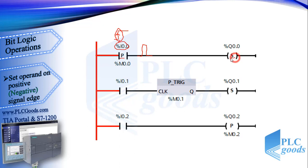Usually a set instruction is used to latch the state, so by the first line Q 0.0 remains on. If you use a simple assignment, Q 0.0 will be on for one program cycle which is about 5 ms. The next instruction is used to query a 0 to 1 change in the signal state of the RLO at its input.